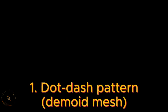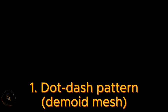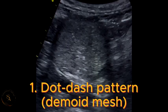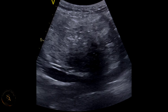The first sonographic presentation is the dot-dash pattern, also called the dermoid mesh. This presents as short and long hyperechoic lines scattered all over the mass, representing the presence of hair, which is one of the components of a dermoid cyst. The images you are seeing are examples of this dot-dash pattern — whenever you see this presentation, you are looking at an ovarian dermoid cyst.